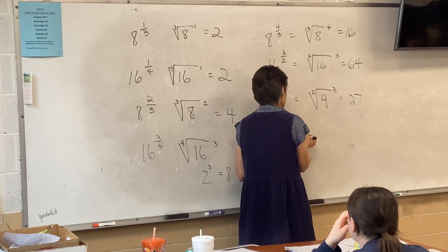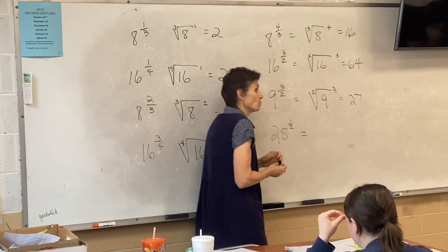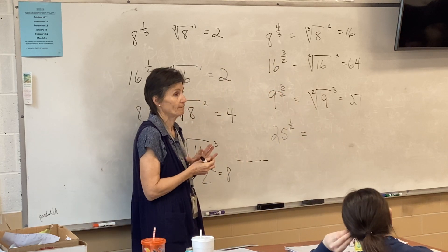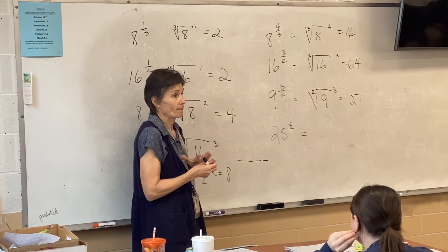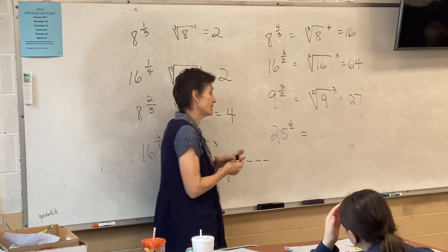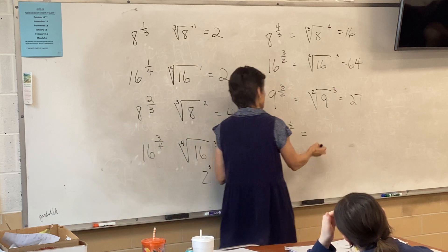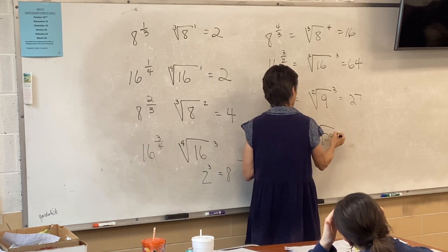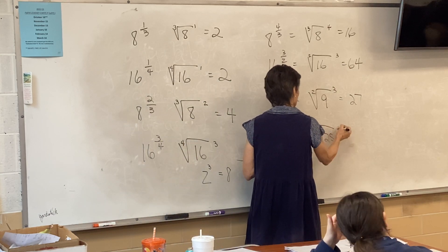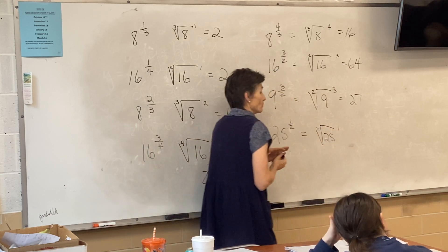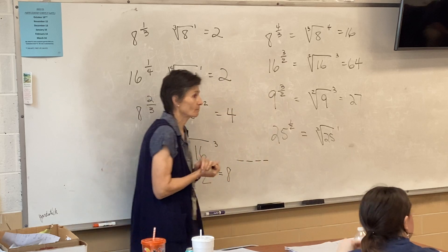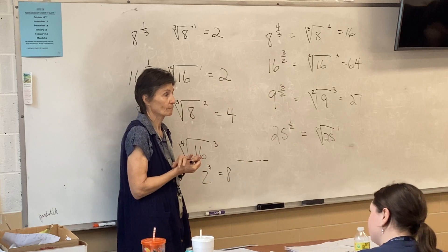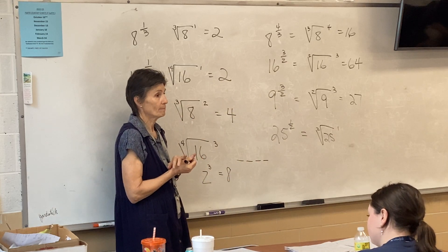Finishing with an easy one: what's 25 to the one-half? Five. Because it means the square root of 25 to the first.